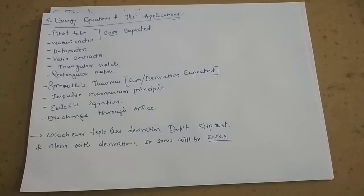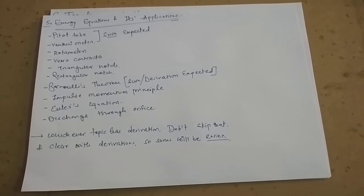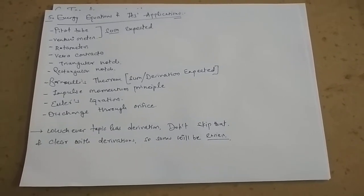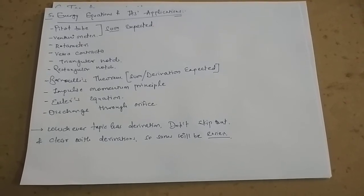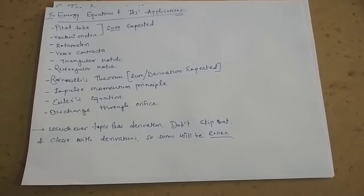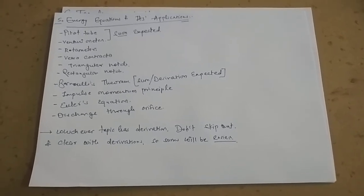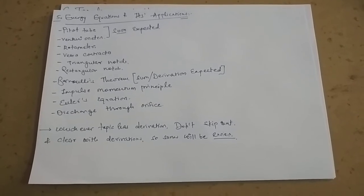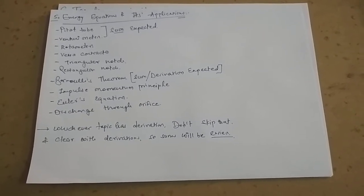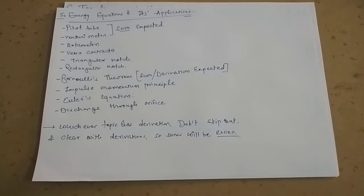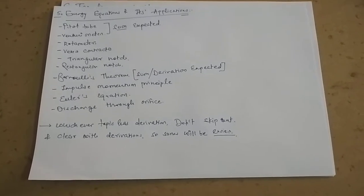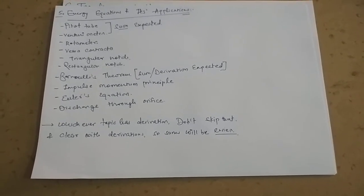There is pitot tube, venturi meter, and rotameter. I guess there will be one theory from this and a sum from pitot tube and venturi meter. You can expect weir, V-notch or triangular notch, and rectangular notch. There is a sum that can be asked from rectangular notch and triangular notch.